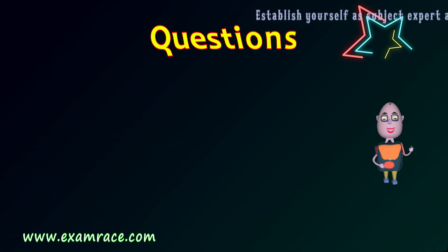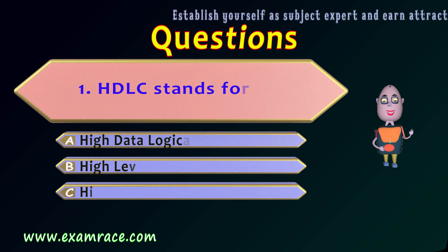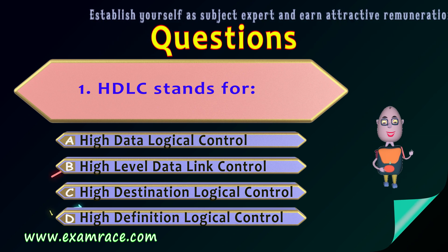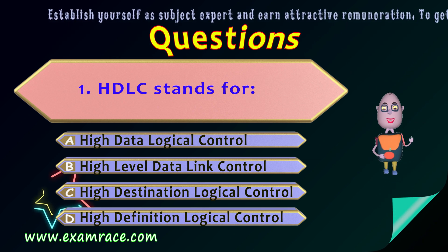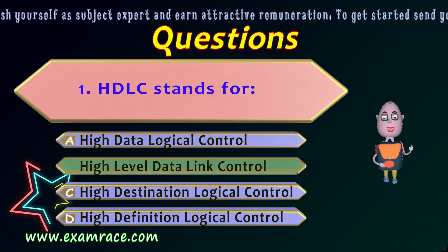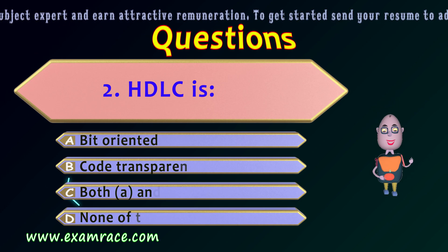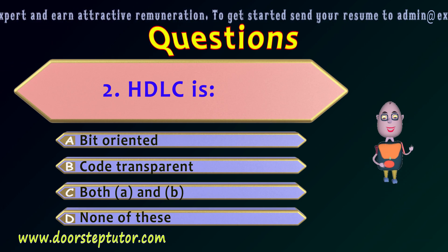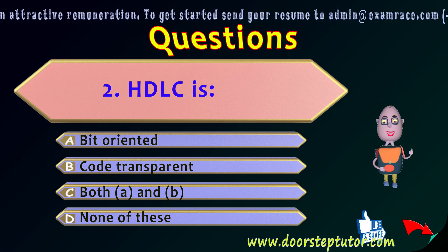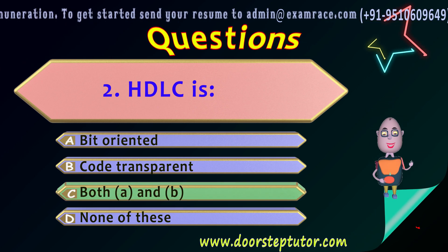Let's look at some MCQs. The first question is: HDLC stands for what? The correct answer is option 2 — High Level Data Link Control. The second question, from previous year UGC NET exams, asks what HDLC is. The correct answer is option 3 — both A and B. Thank you so much.